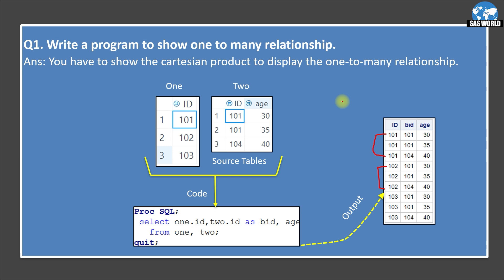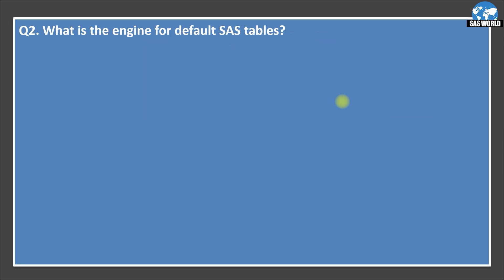Let's move on to the next question. What is the engine for default SAS tables? So when you create a library for SAS tables, what engine you use? What do you specify? So when we will create a library for only SAS tables, we do not give any SAS engines because there is a default SAS engine that works. So what is this engine? Let's see the answer.